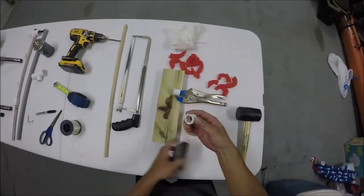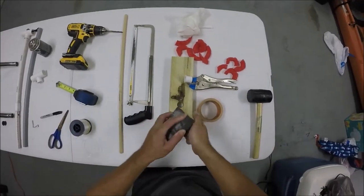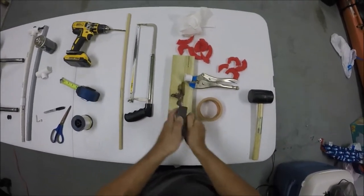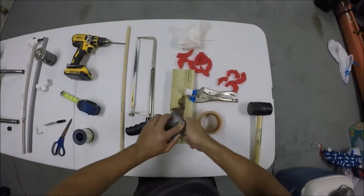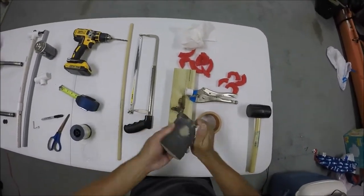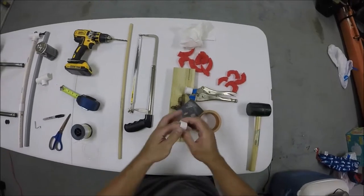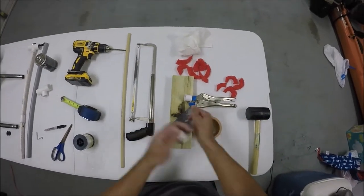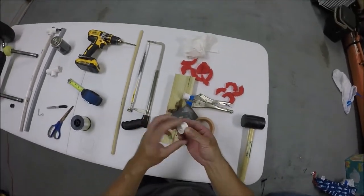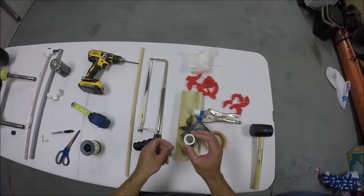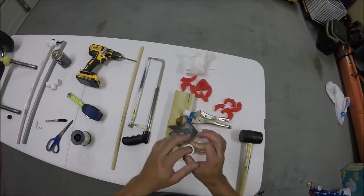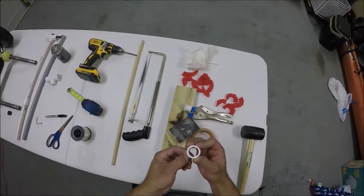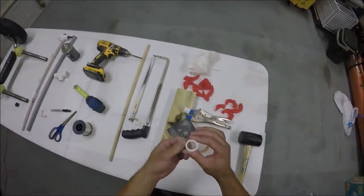Alright, so here it is. I'm just gonna sand it down some. You don't want to use a PVC cutter because it tends to squeeze and create an oval instead of a circle. And that's gonna prevent it from sliding down the PVC tube.